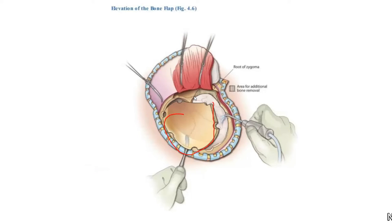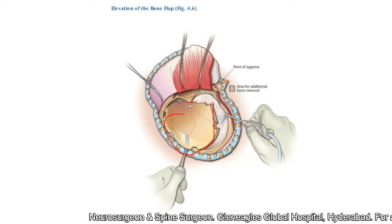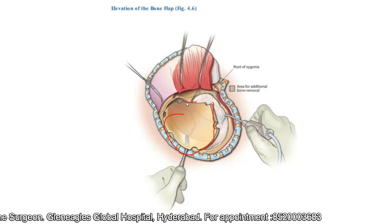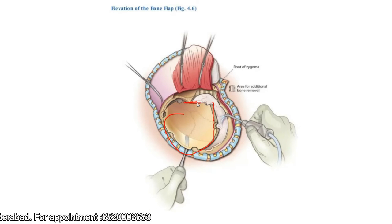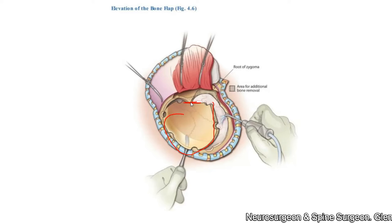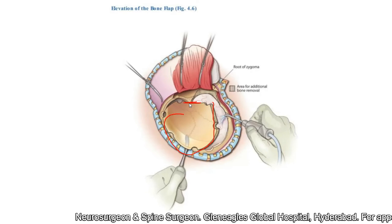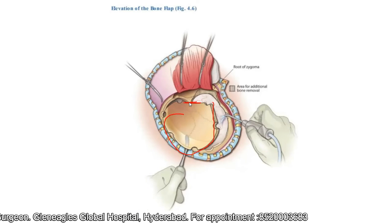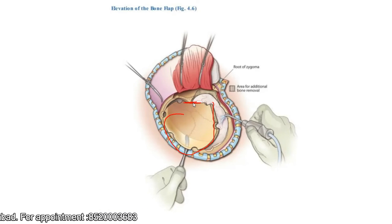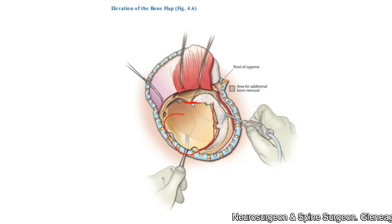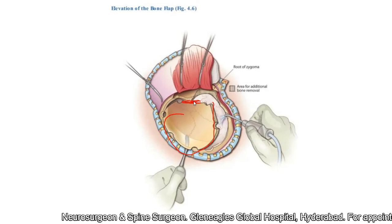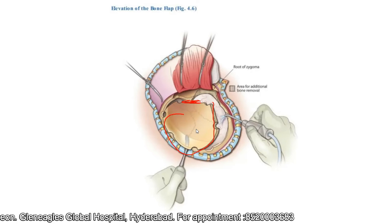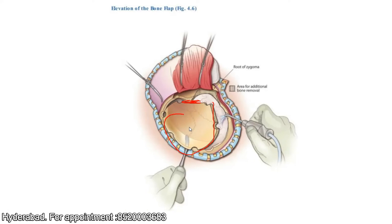One important precaution: at the sphenoid ridge, you must drill the bone to make it papery thin. When elevating the bone, it should easily fracture at the sphenoid ridge. If it does not fracture easily, take additional time to drill it — because if it is thick and causes an uncontrolled fracture, the fracture can extend into the base of skull across foramina like the foramen spinosum, injuring the meningeal arteries and causing torrential bleeding that is difficult to control. Once you elevate the bone flap, this usually causes a demonstrable fall in ICP if you have already placed an ICP monitor.